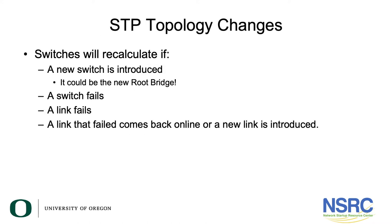The spanning tree topology will change under certain conditions — for example, a new switch is introduced that could end up being the root bridge, a switch fails, a link fails, a link that failed comes back online, or a new link is introduced.